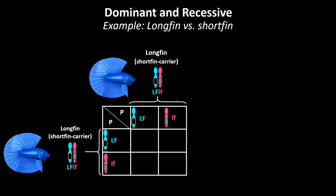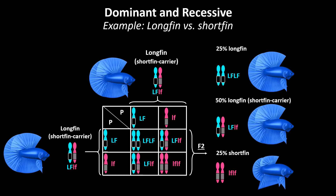We can see three different combinations appearing: offspring receiving the dominant long fin trait from both parents; offspring receiving the dominant long fin trait from one parent and the recessive short fin trait from the other; and offspring receiving the recessive short fin trait from both parents. Phenotypically, 75% of the spawn will be long fin. However, 25% of the long finned fish is homozygous for the trait and will breed true. 50% of the offspring will be phenotypically long fin but genetically carriers of short fin, whereas 25% of the spawn will be short fin as they are homozygous for the recessive short fin trait. It is important to keep in mind that a long finned fish can be a carrier of short fin, but a short finned fish is never a carrier of long fin.